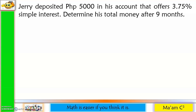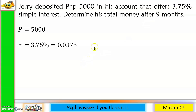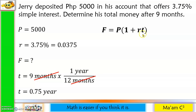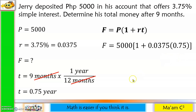For example, Jerry deposited P5,000 in an account offering 3.75% simple interest. Determine his total money after 9 months. P equals 5,000, R equals 0.0375, and T equals 9 months — converted to 9 divided by 12 equals 0.75 years. We are looking for F. Using F equals P times (1 plus RT), we get F equals P5,140.625, or P5,140 pesos and 62.5 centavos.